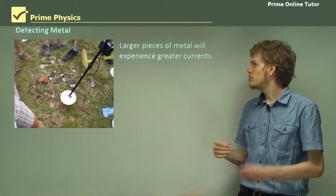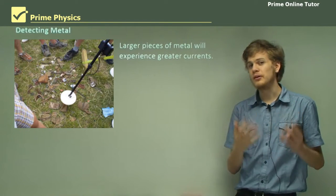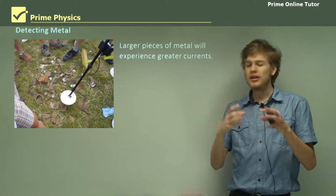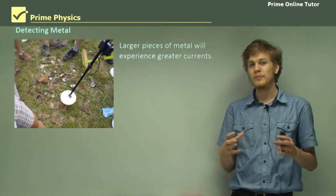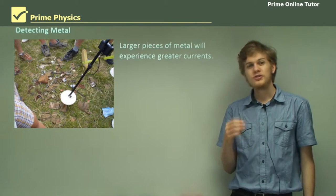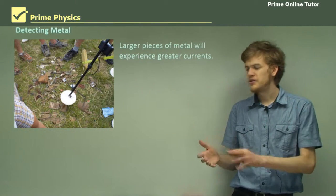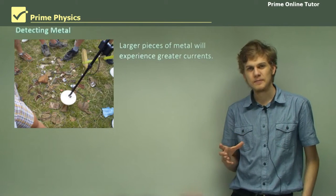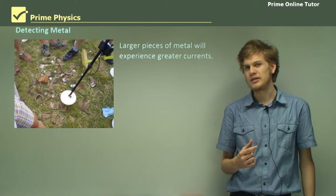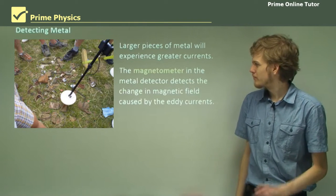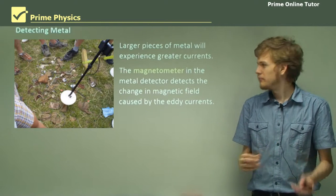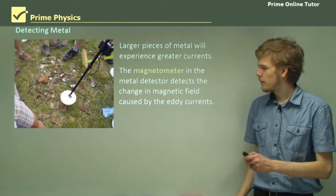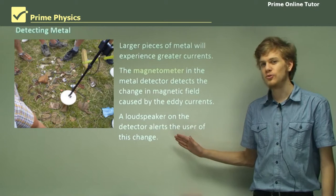The larger pieces of metal will experience greater currents, and so the changes they produce in the magnetic field will be more obvious. Because we have that detecting coil on the metal detector, when there's an eddy current passing through some unseen piece of metal, the magnetic field that the detecting coil is picking up will change. The current through the detecting coil will change, but only slightly. The magnetometer will detect the change in magnetic field that's caused by the eddy currents.